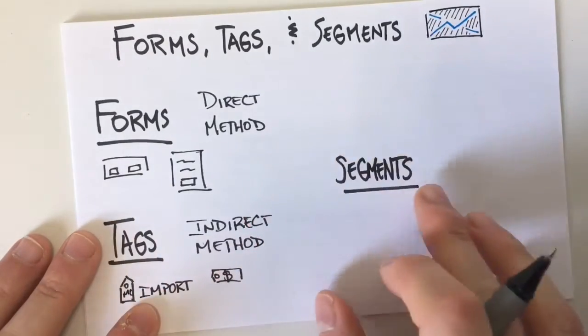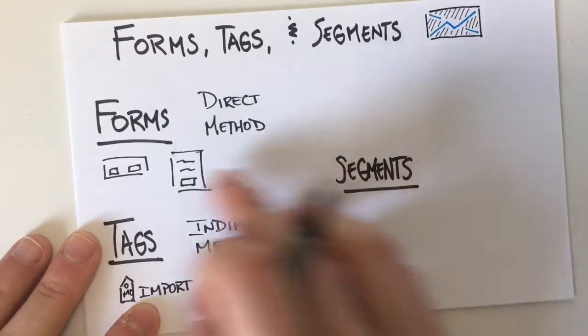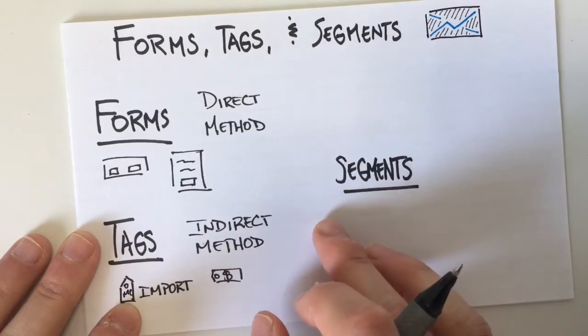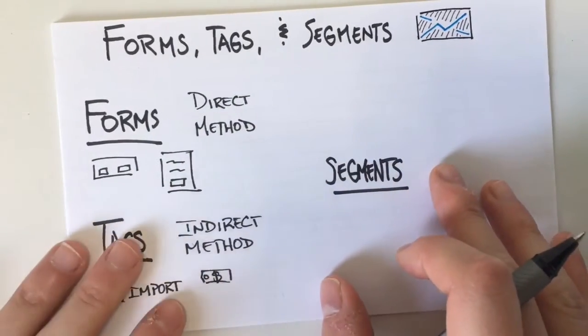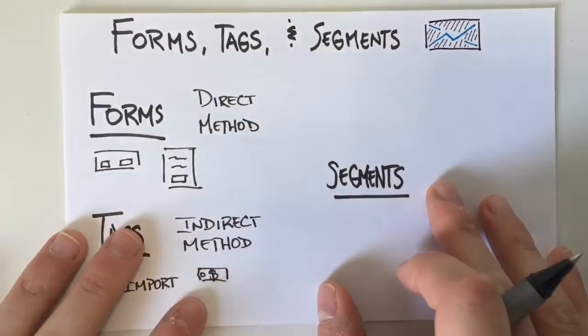So the way that segments work is that segments combine these forms and tags and organize them in a way that you want to email and target a group of subscribers.